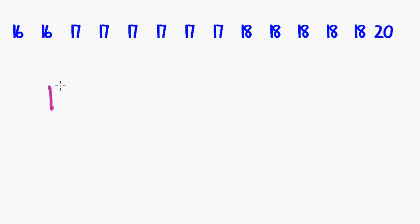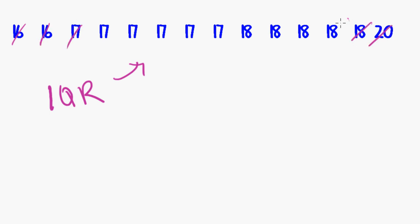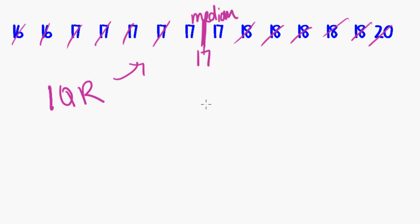Now let's find the IQR for the ages data set we've been using in this tutorial. Remember, the first step is to find the median. Counting in from each end, I've reached the middle between two points, so my median is 17.